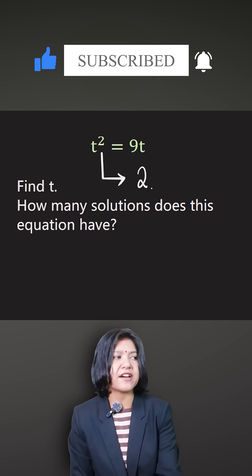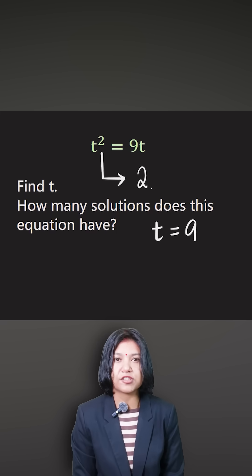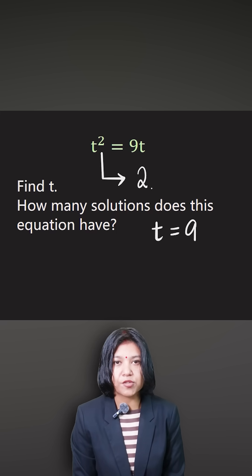Now, a lot of you will go ahead and divide both sides by t, and then you might write that it is just t equals 9. That's the only solution. But that is a wrong approach.